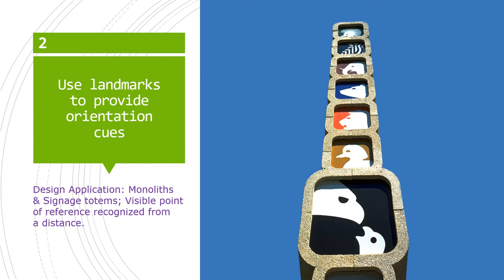Design applications for landmarks include monoliths and signage totems — like this example from the Washington National Zoo. Tall structures and signage totems are ideal for creating a visual point of reference that visitors recognize as the information mechanism at a distance. This would be considered a totem because there are different symbols stacked on top of each other, versus a monolith which would be just one giant statue.